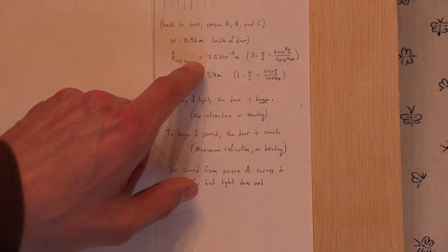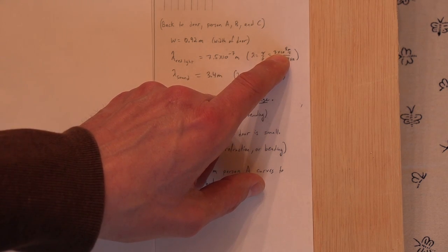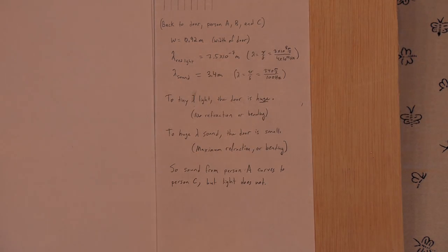So again, with light, they might use 331 here for the speed. No, no, that's sound at STP, not for light. So don't mix the velocities up. Use sound's for sound and light's for light.